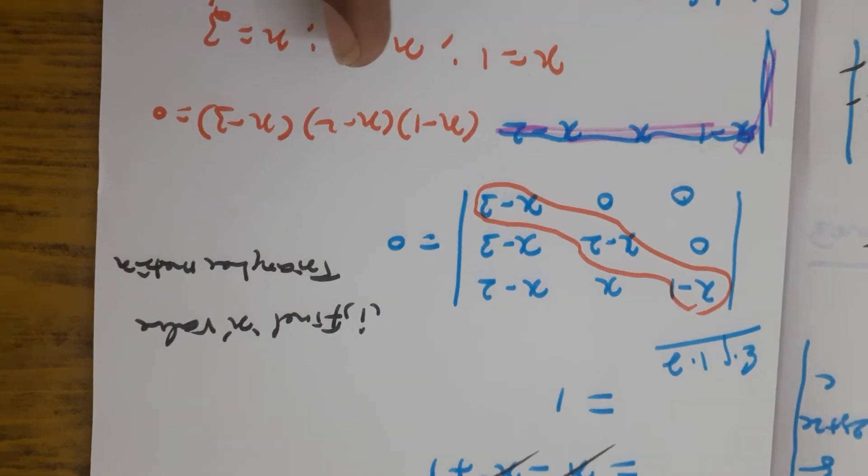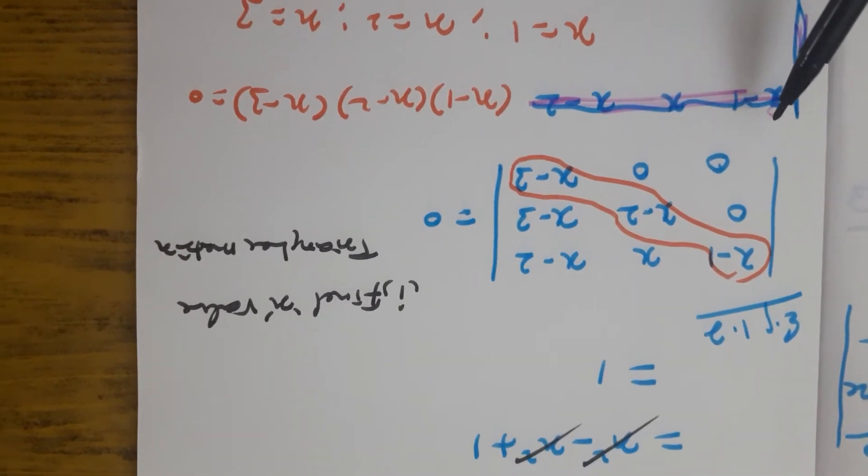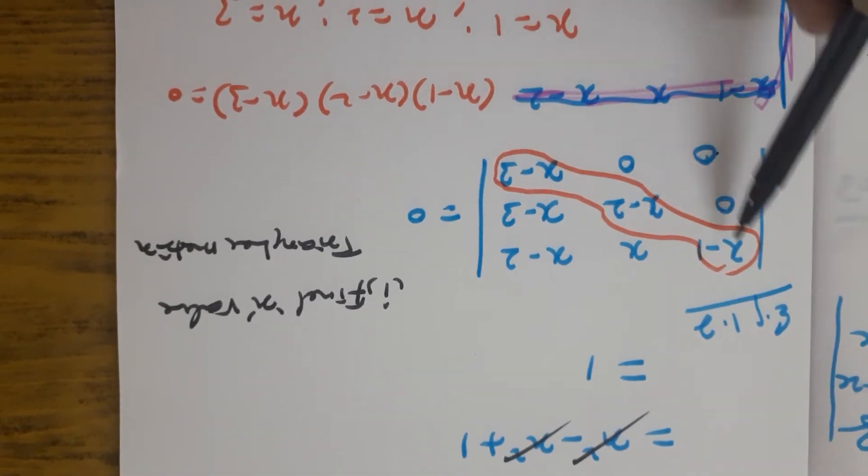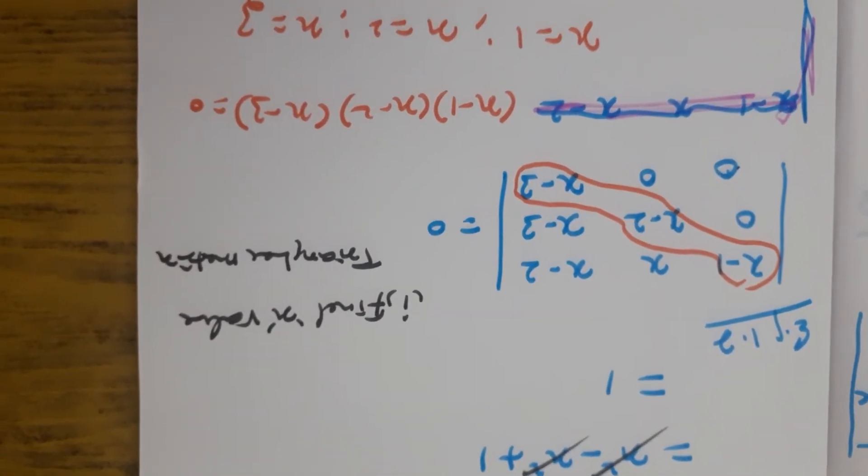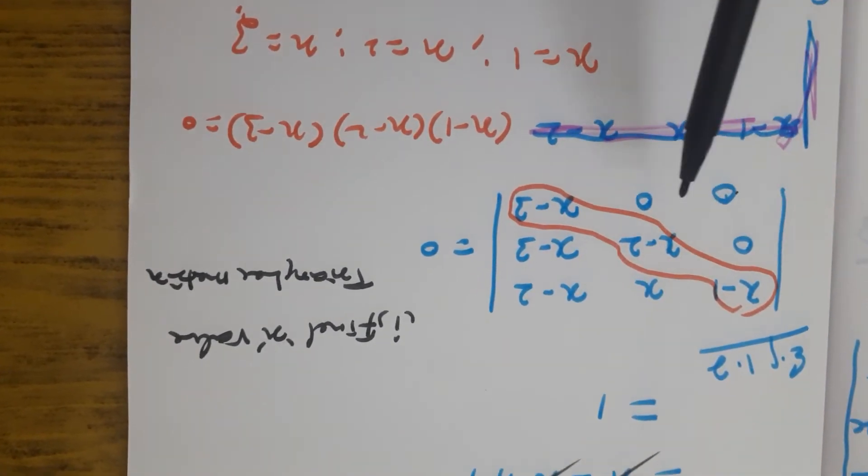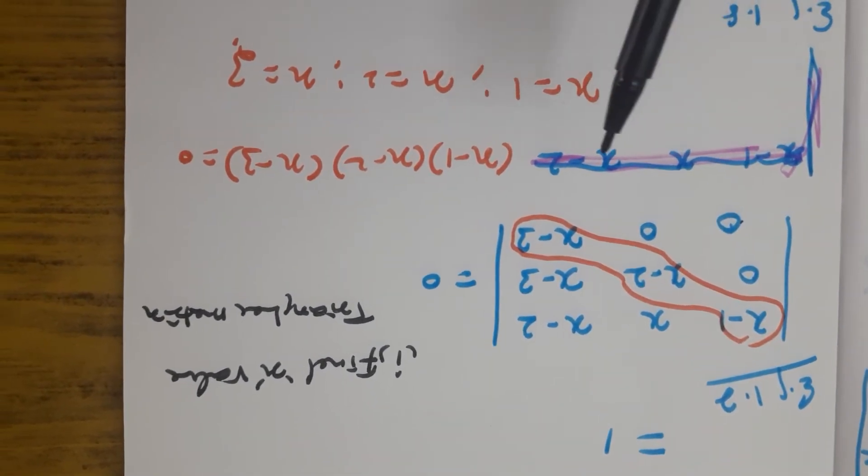Lower triangular matrix means these three elements are 0, remaining all the elements are not 0. Upper triangular matrix means these three elements are 0, remaining are not 0.